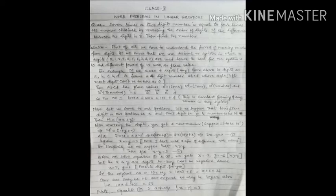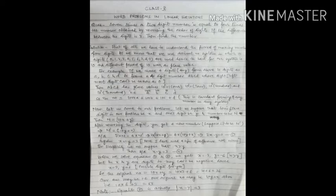Let us move towards the solution. First of all, we have to understand the process of making numbers from digits. As we know, we use the decimal number system in which ten digits — zero, one, two, three, four, five, six, seven, eight, and nine — are used to frame any number. Since the number of digits we use is ten, ten is the base of our number system, which is why it is called the decimal number system.